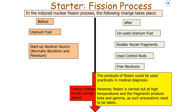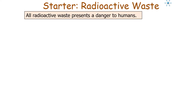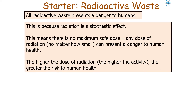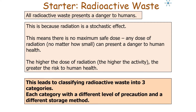The products of fission can be used practically in medical diagnosis. However, fission is carried out at high temperatures and the fragments produce beta and gamma radiation, so precautions must be taken. All radioactive waste presents a danger to humans because radiation is a stochastic effect — there is no maximum safe dose. Any dose, no matter how small, can present a danger, and the higher the activity, the greater the risk.